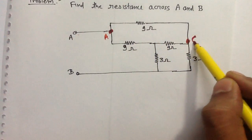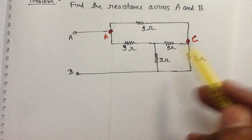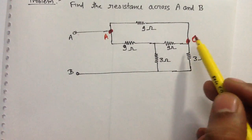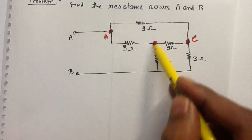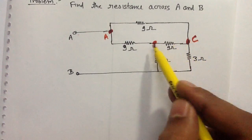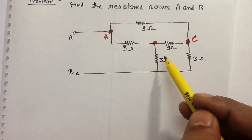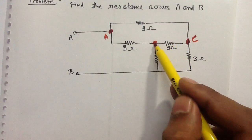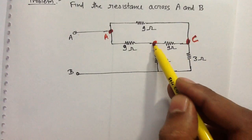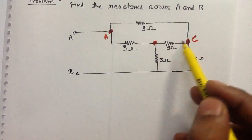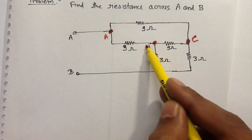This point will be different from A, and this point will be different from C, because there is an electrical element between them. This is why I give it a new letter. This point is C. Looking at these two points, this electrical element is present between them, so they cannot be the same — so I give the new name D.